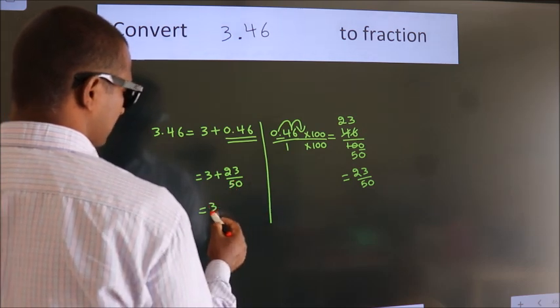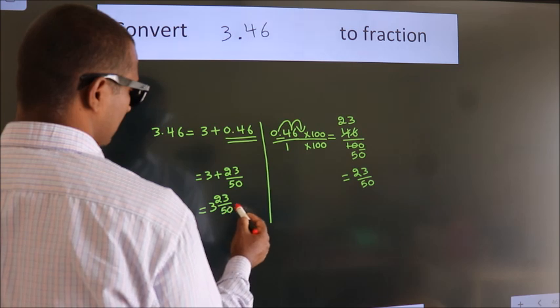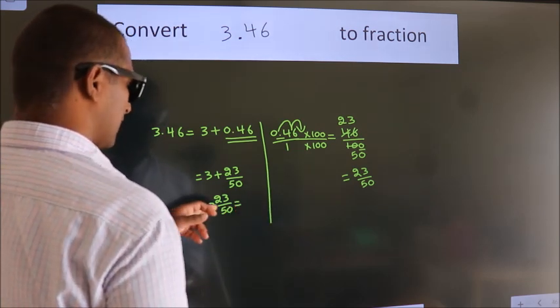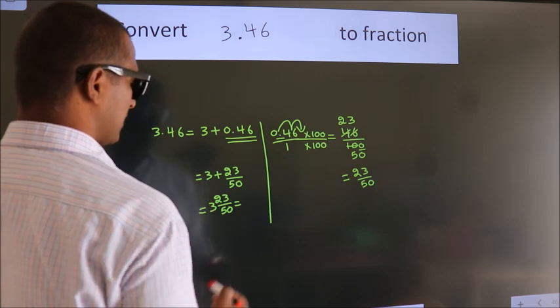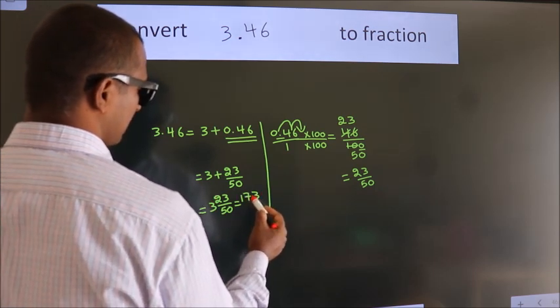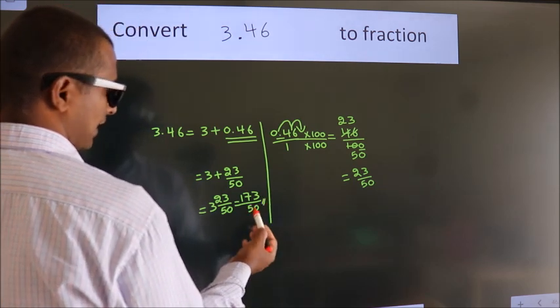In mixed fraction it is 3 and 23 over 50. And in improper fraction, it is 3 into 50, which is 150 plus 23, equals 173 by 50.